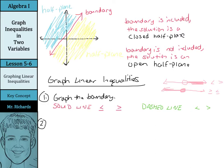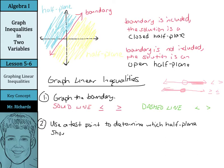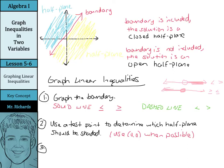Step two is going to be to use a test point to determine which half plane should be shaded. I'm going to leave a hint here: use (0, 0) when possible — it makes things much easier to calculate. We'll use (0, 0) as our test point when possible, so as long as our boundary isn't going through (0, 0), we can use it. Once we determine which half plane should be shaded, we're going to shade the half plane that contains a solution.